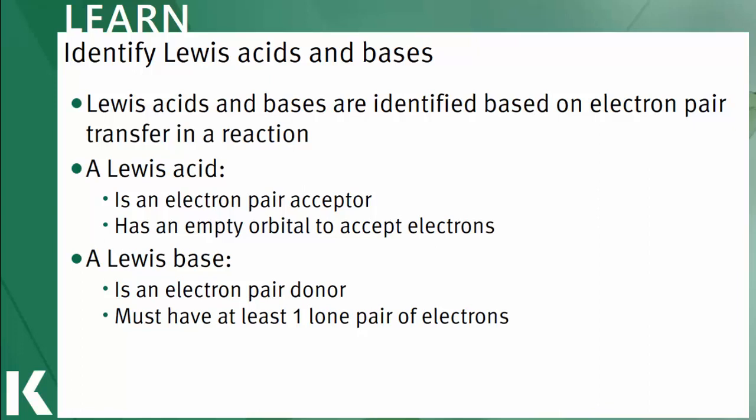Lewis acids and bases are all about the movement of electrons, and to remind me, I think Lewis electrons. A Lewis acid has an empty orbital and will be able to receive electrons. A Lewis base has a pair of electrons and will be able to donate it to a Lewis acid.